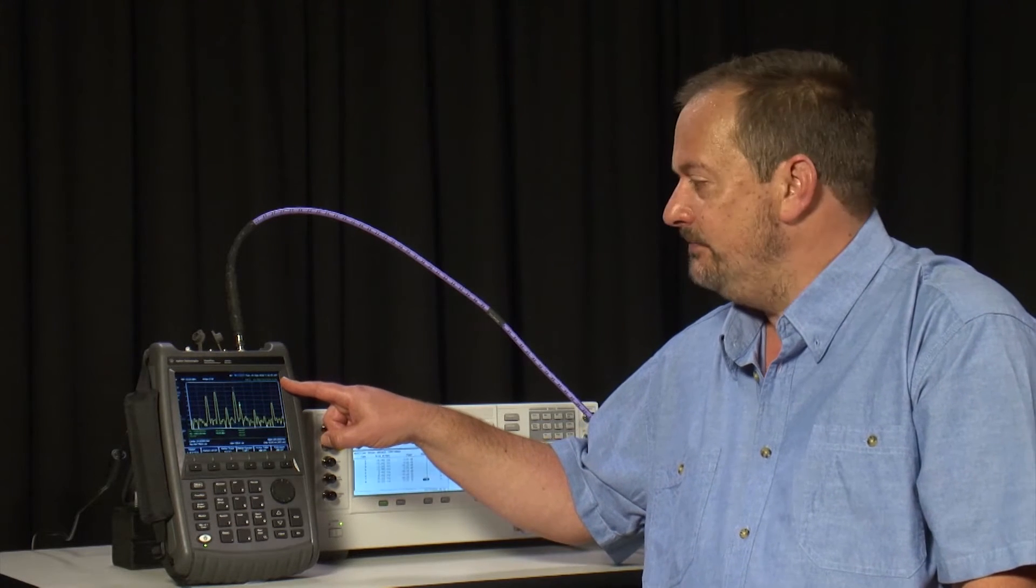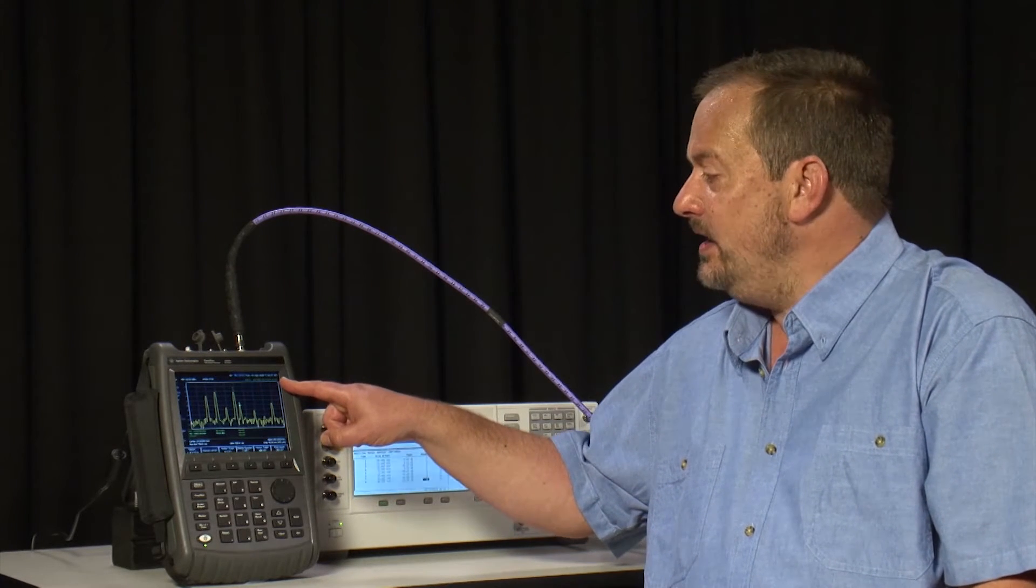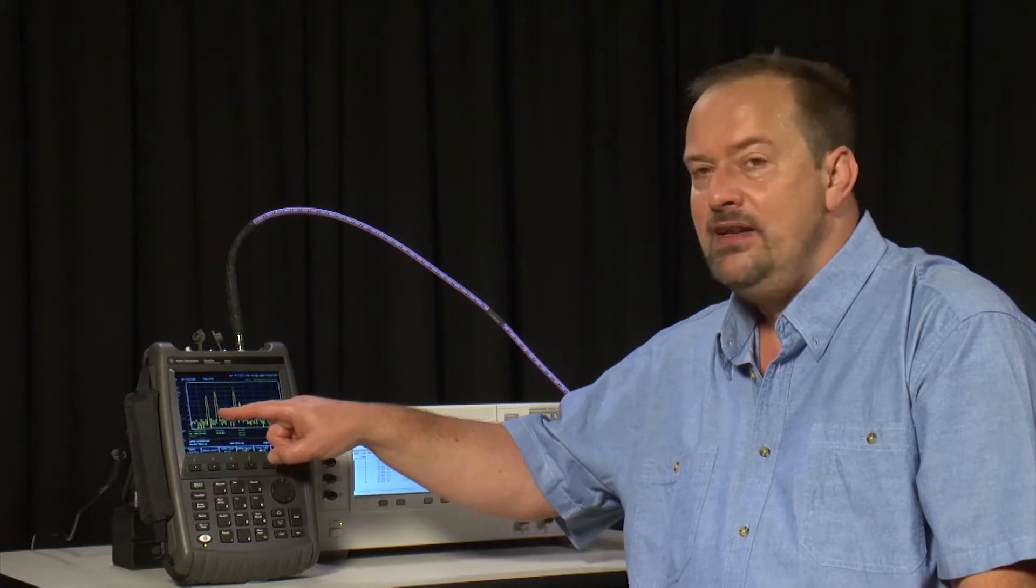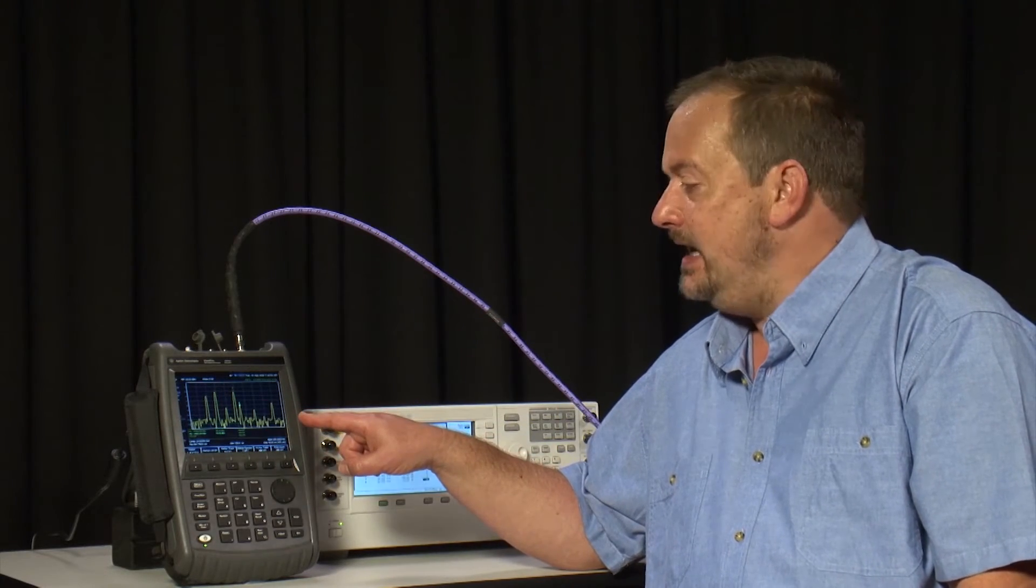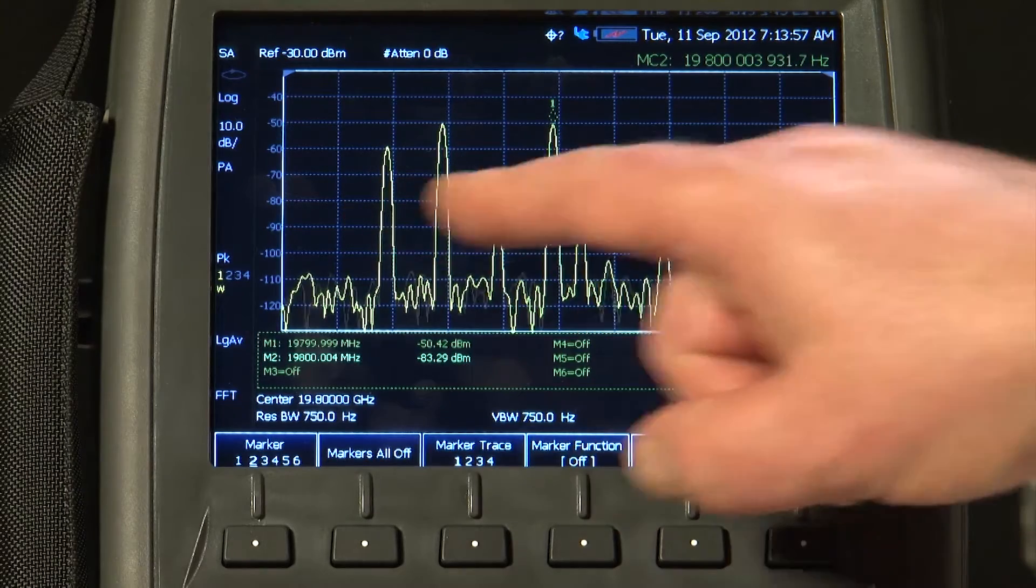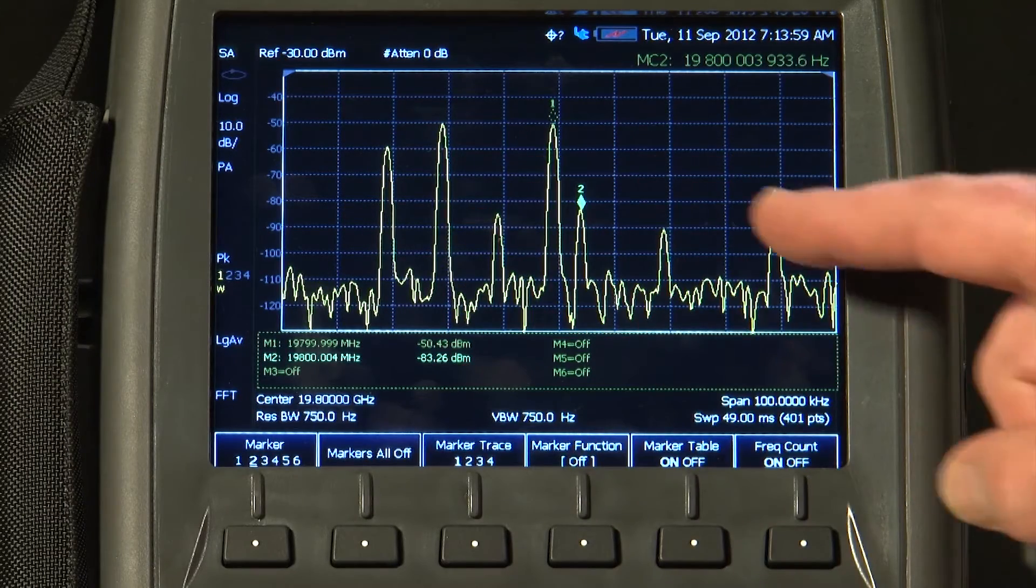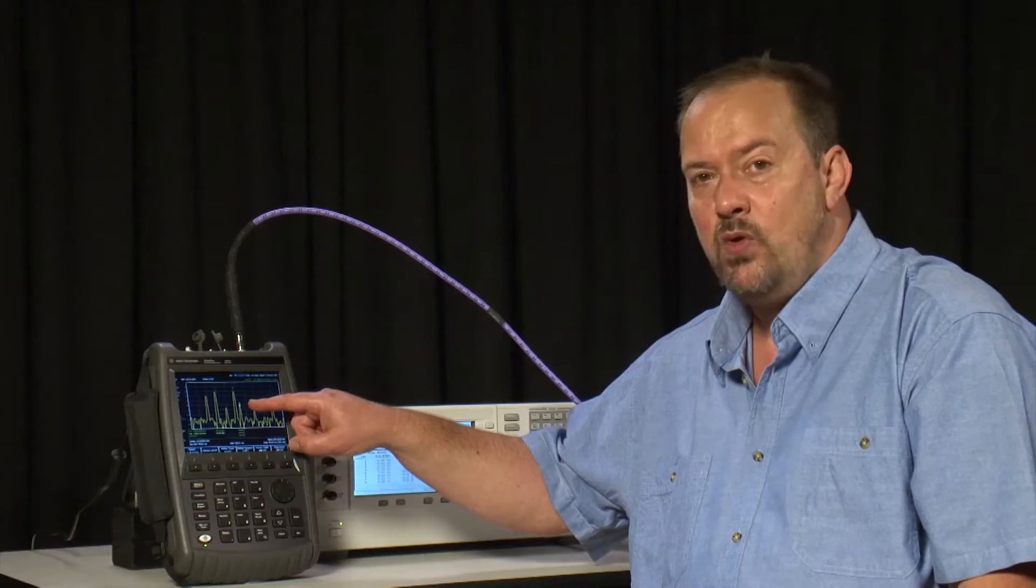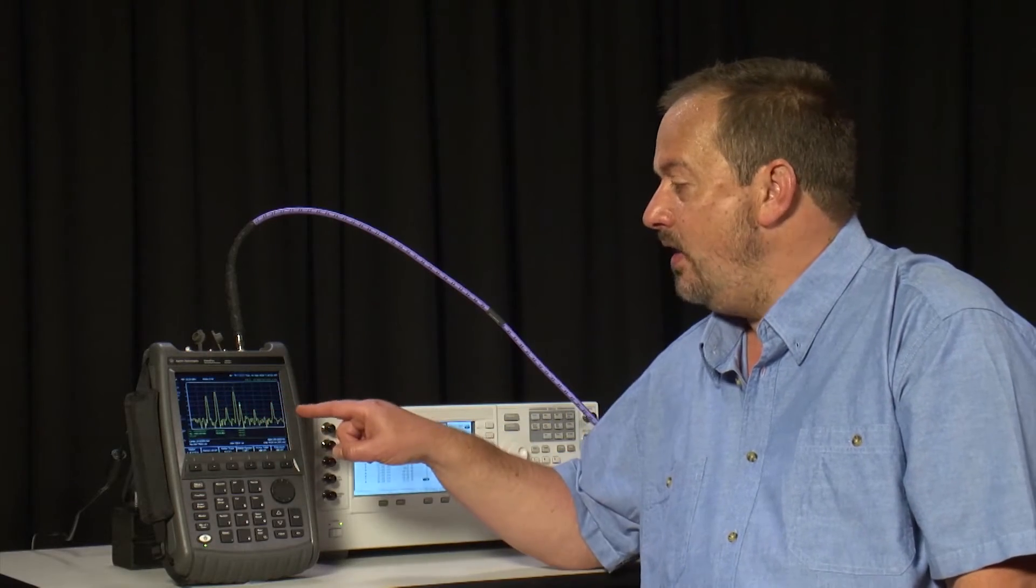But there is one additional advantage. With a normal frequency counter, it can only measure the frequency of a single signal being presented at the input. But with the marker counter function, we can have multiple carriers present and measure the frequency of just one of those, even in the presence of all those carriers.